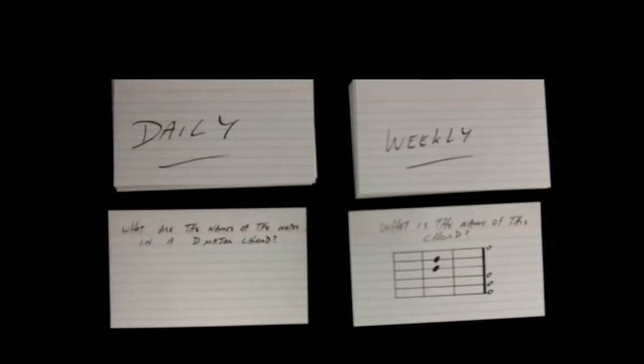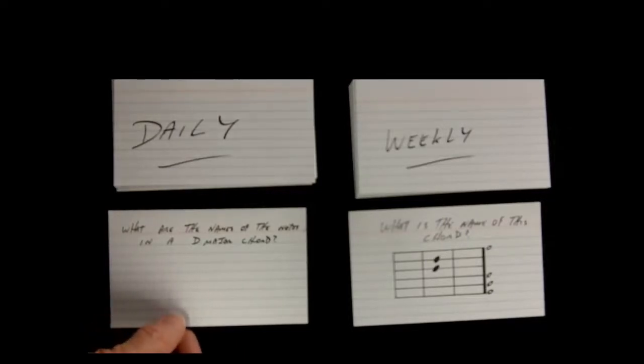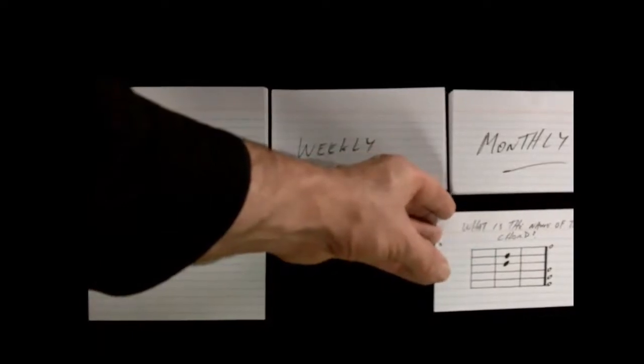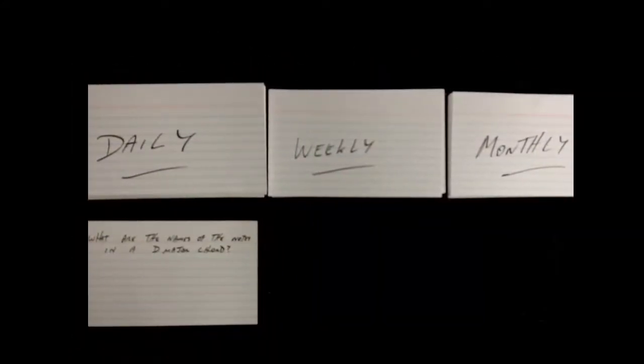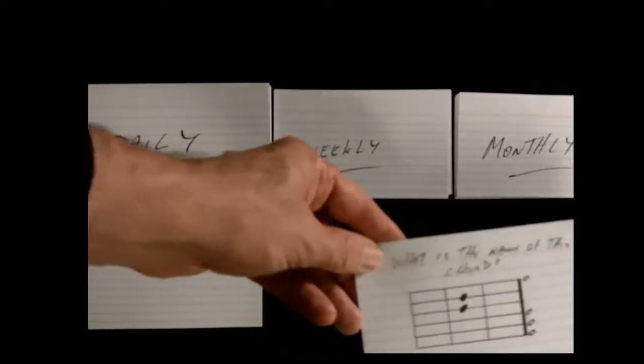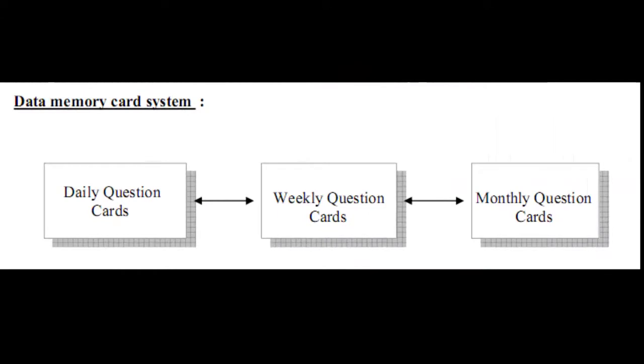I'll check back tomorrow, and if I get the answer right it will progress to the weekly pile. If we get it right at the end of the week, that card moves to our monthly pile. If we got it wrong, it goes back to our daily pile. The information moves from a daily pile to a weekly pile to a monthly pile. Once the information is in the monthly pile and you get the answer right at the end of the month, you own the information — you don't have to do anything more with it. In fact, you can throw that card away.